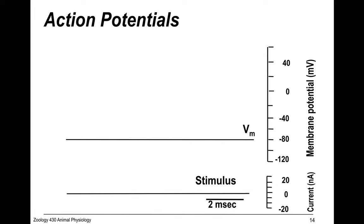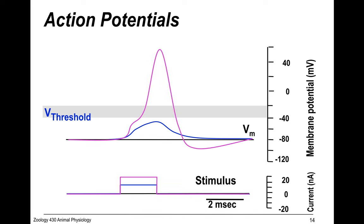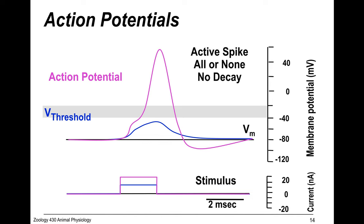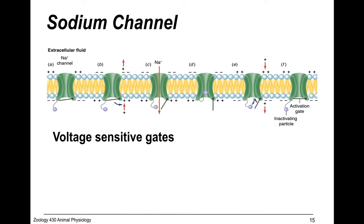Action potentials look quite different. If sub-threshold, the response is graded, but if it goes past the threshold, you get an action potential. It's an active spike — all-or-none. If sub-threshold, it just doesn't spike, but once above threshold, the spike is always the same size. Importantly, there is no decay with action potentials — the signal travels down the axon at the same amplitude.